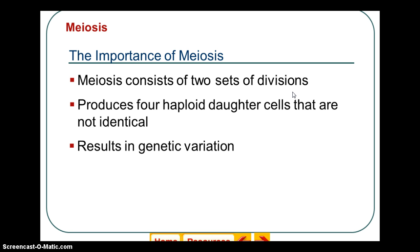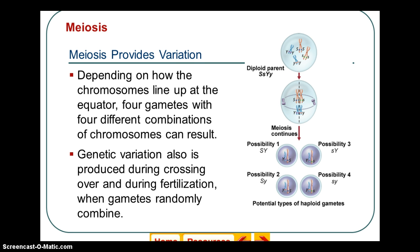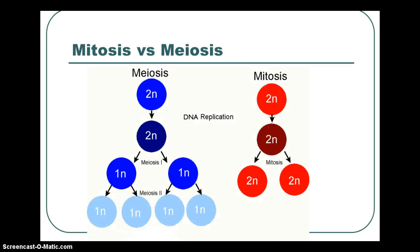Meiosis is two cellular divisions that produces four haploid daughter cells that are not identical, resulting in genetic variation. Meiosis is the reason why you don't look like half of your mom and half of your dad — you are a combination of their characteristics. The division of chromosomes and cells also adds to variability.